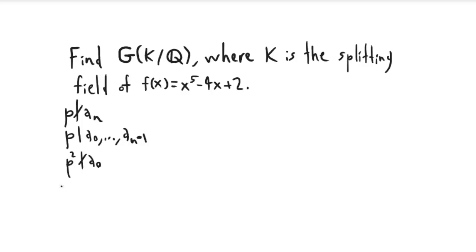You can see that that's true with this polynomial by setting p equal to 2. Because 2 doesn't divide the leading coefficient, it does divide the other coefficients, but the square of 2 doesn't divide this number. So this is an irreducible polynomial.